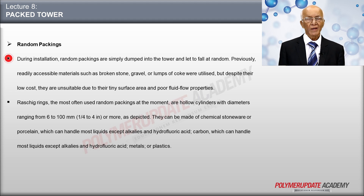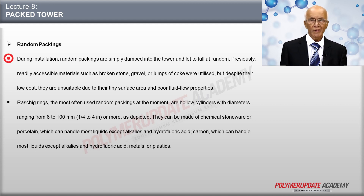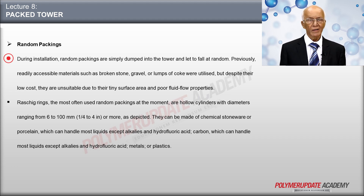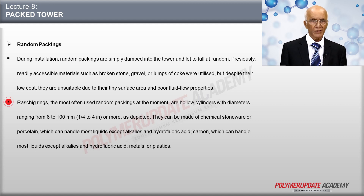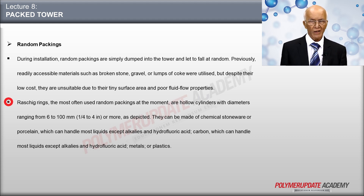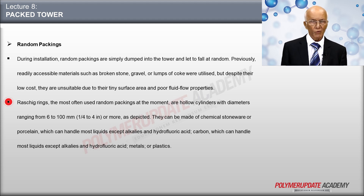Random packings are simply dumped into the tower during installation and allowed to fall at random. In the past, readily available materials such as broken stone, gravel, or lumps of coke were used, but although inexpensive, they are not desirable due to small surface area and poor fluid flow characteristics. The most frequently used random packings today are manufactured Raschig rings — hollow cylinders with diameters ranging from 6 to 100 mm or more. They may be made of chemical stoneware or porcelain, useful in contact with most liquids except alkalis and hydrofluoric acid; of carbon, useful except in strongly oxidizing atmospheres; or of metals or plastics.